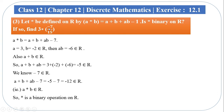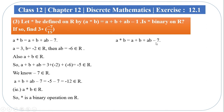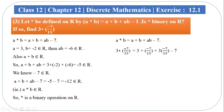Second part: find 3 star minus 7 by 15. So a star b equal to a plus b plus a b minus 7. Here a equals 3 and b equals minus 7 divided by 15. So 3 star minus 7 divided by 15 equals a plus b plus a b minus 7, where a equals 3 and b equals minus 7 divided by 15.